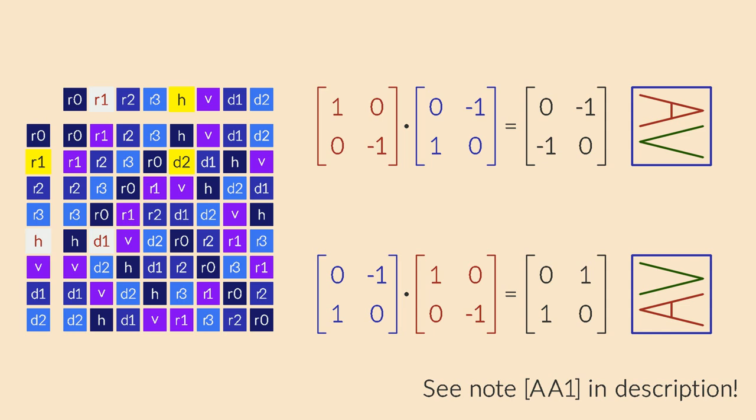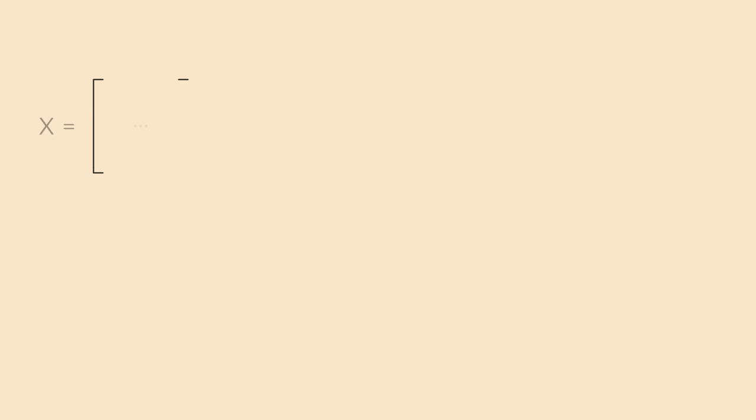This simple observation happens to play a huge role in quantum physics, where we use matrices not just to transform things, but also to measure things. The fact that they don't commute implies that the order of your measurements can make a difference. If you first measure the position of your particle with a matrix called x, and then you measure the momentum with a matrix called p, you will get a specific result. But if you measure p first and then x, you will get a different result. Every measurement always influences the result of the next measurement in a fundamental way.